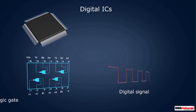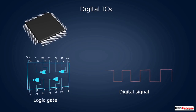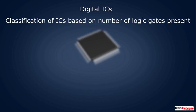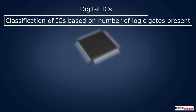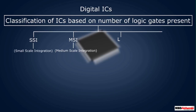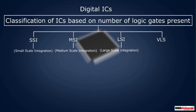In digital ICs, the input signals are digital signals that have only two values. They contain circuits such as logic gates. Based on the number of logic gates present in it, digital ICs can be further classified as SSI, MSI, LSI, and VLSI.